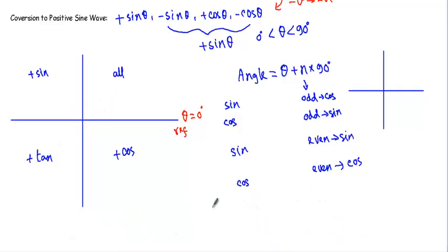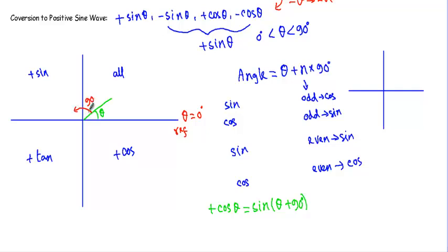To convert plus cosine theta into sine theta, we use sine(theta + 90°). A straight line produces angle theta with respect to the reference axis. Rotating another 90 degrees counter-clockwise gives theta + 1×90 degrees, where n equals 1, which is odd. Therefore sine converts to cosine. In the second quadrant the magnitude of sine is positive, so we get plus cosine theta.